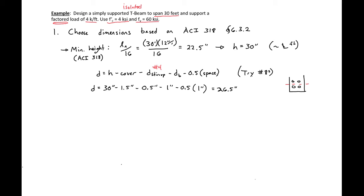Next we'll make some assumptions. Our first assumption is that our bw, our web width, is about equal to 0.5 times our d. So we have 0.5 times 26.5 equals 13.3 inches. I'm going to round down and try a bw of 12 inches, though you could round up and use 14 inches. Try to keep it at least as an integer and preferably at intervals of two.